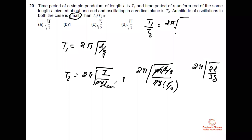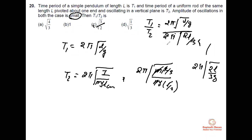I have a factor given: one is l over g. So your answer will be C. Your answer is C. Is it clear to everyone?